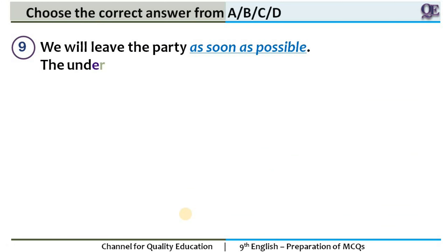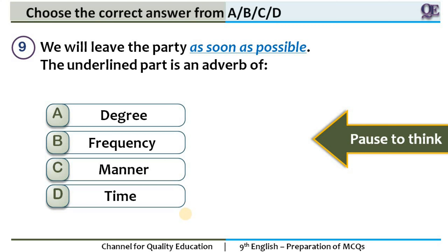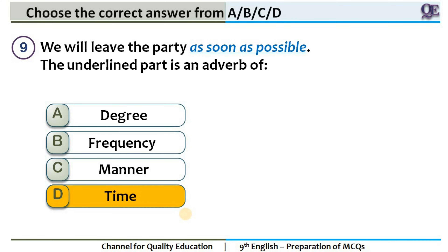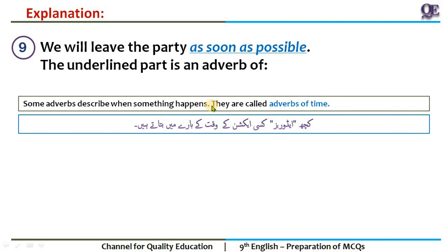Question 9: 'We will leave the party as soon as possible.' The underlined part is? 10 seconds. The answer is adverb of time. Some adverbs describe when something happens — they are called adverb of time. 'As soon as possible' indicates time. 'We will leave the party as soon as possible' — as quickly as possible. A specific time is not given, but it refers to time. Words like 10 o'clock, 5 o'clock, in the morning, in the afternoon are also used this way. So you will choose this option.